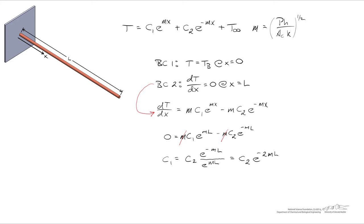bringing this right hand term over to the left and we find that C1 is equal to C2 multiplied by the ratio of e to the mL divided by e to the negative mL, simplifying it's C2 times e to the negative 2mL.